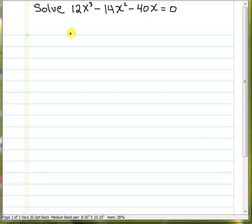The first kind of factoring we should always look for is, is there a GCF? So if we look at 12, negative 14, 40, all those numbers are divisible by 2, so we can factor out a 2. And every term in this polynomial has an x, so we can factor out a 2x.